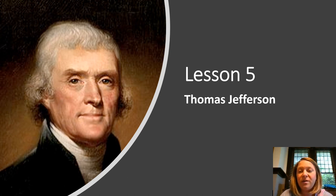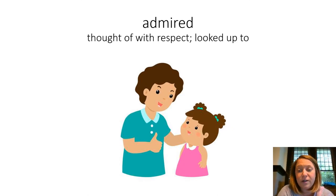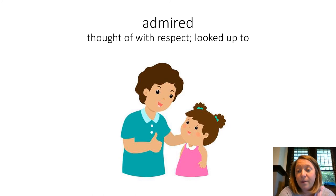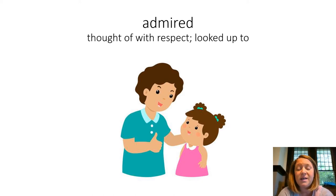First we're going to get started with our vocabulary. Our first vocabulary word is 'admired' — thought of with respect or looked up to. Somebody that I admire is my mother. You can see a picture of a little girl looking up to her mother, or possibly her teacher or grandmother. You think of them with respect and you look up to them.